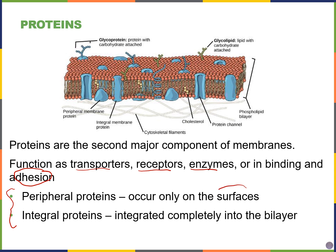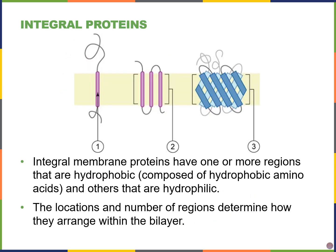Peripheral proteins are only found on the surface of the membrane, either the inside or the outside. Integral proteins are integrated completely in the membrane, and they pass through both sides of the phospholipid bilayer. For proteins that are embedded in the phospholipid bilayer, they must themselves have both hydrophilic and hydrophobic regions. The parts that face the inside and outside of the cell will be hydrophilic, but the part of the proteins embedded within the fatty acid tail region will have to be hydrophobic.